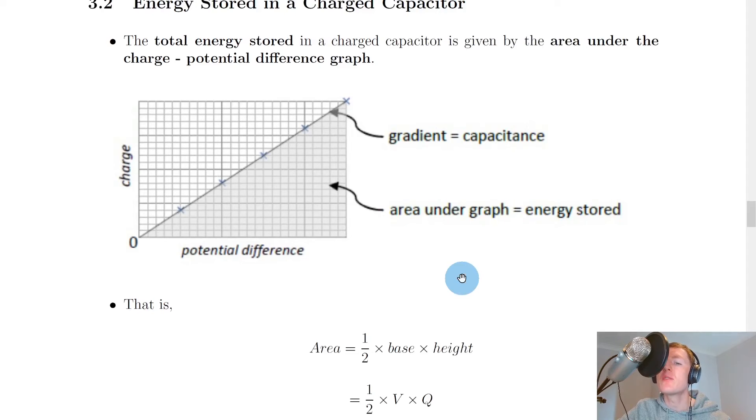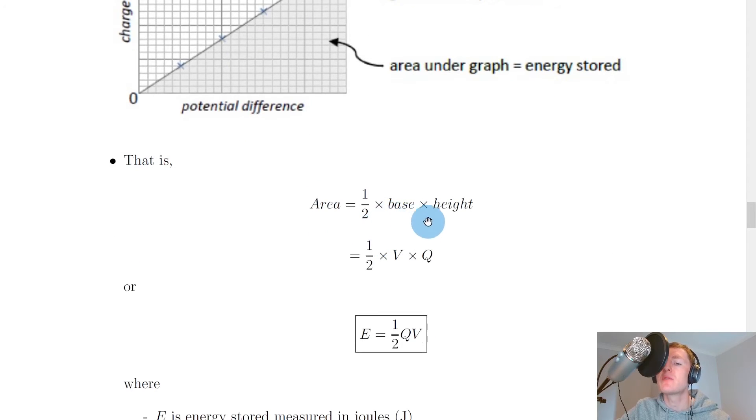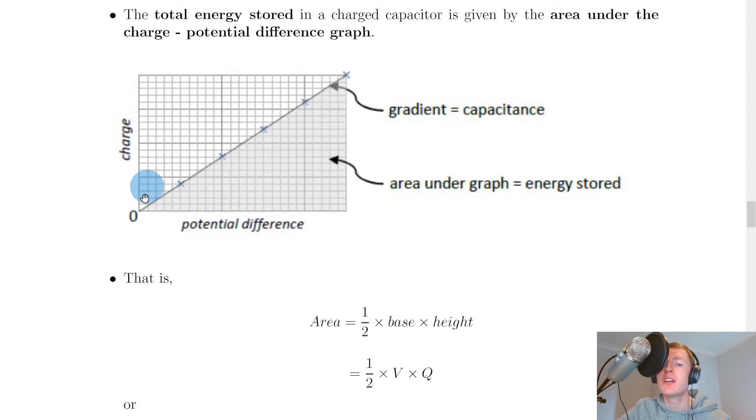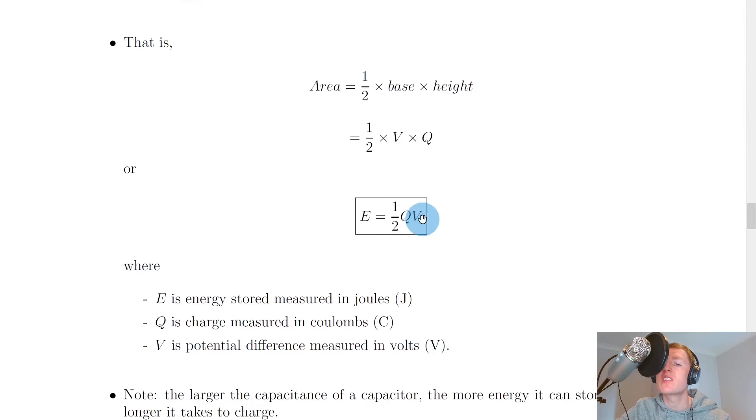We can actually form an equation for this energy stored by using an old familiar formula from maths, which is the area of a triangle. The area of a triangle is equal to half times the base times the height. If we look at our specific graph here, we've got potential difference on the x-axis and charge on the y-axis. So the base is going to be v, the potential difference. That's a half times v times q for the charge on the y-axis. Or if we rearrange this slightly, we get e equals a half qv, which is our first equation for energy stored in a capacitor.